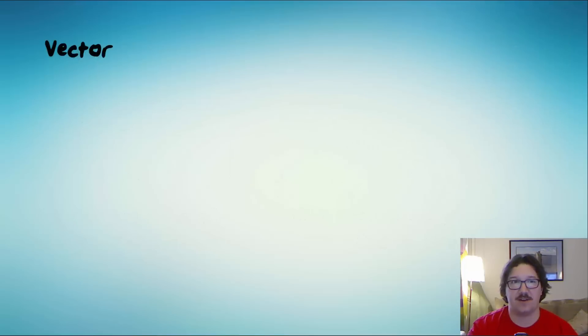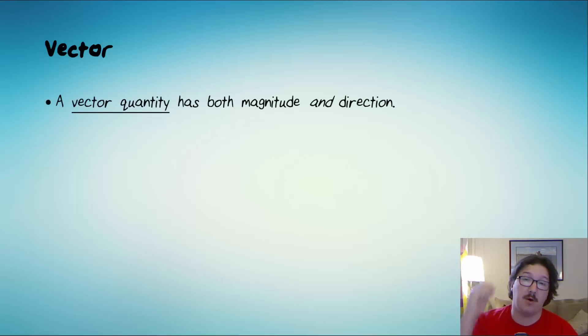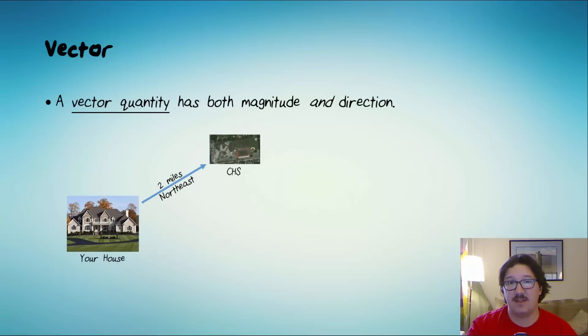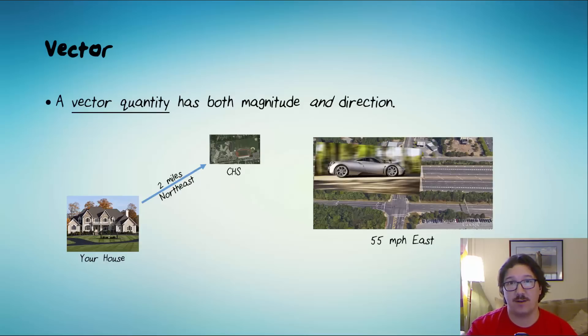So let's define a vector. A vector is a quantity that has both magnitude and direction. And I hope that you can see in these two examples how important the direction information is.